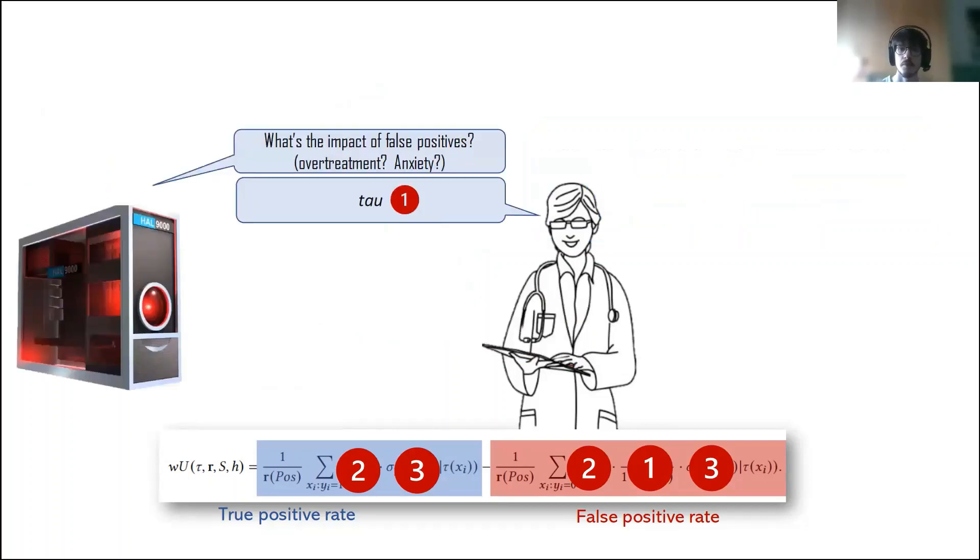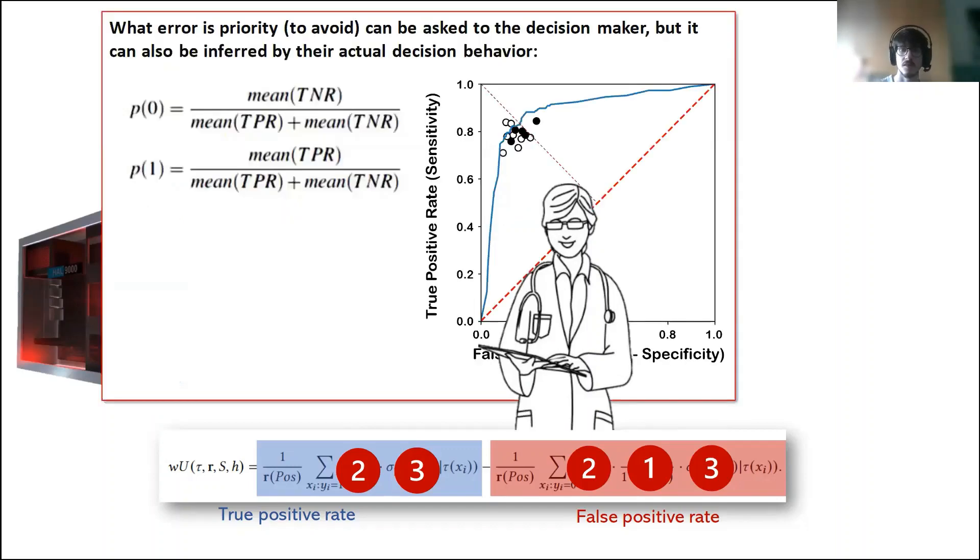So in regards to the first property, essentially here we are asking what is the impact of false positives? For example, in the medical setting, this could be considered the cost of over-treatment or the risk of anxiety of the patients. This element is ultimately encoded into a probability threshold which is called tau. This is a very common information that is used in utility-based metrics. However, a common difficulty that we have in real-world problems is how to elicit this kind of information. Indeed, it is not always easy to have decision makers elicit probabilities. So we also propose a technique for which this threshold can be inferred automatically based on the annotation behavior of the decision makers.